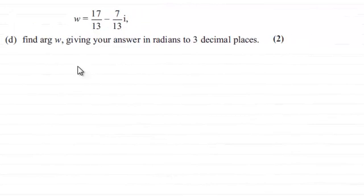Hi. Now, for this last part here, we're told that the complex number w equals 17/13 minus 7/13i, and asked to find the arg of w, giving your answer in radians to three decimal places for two marks.